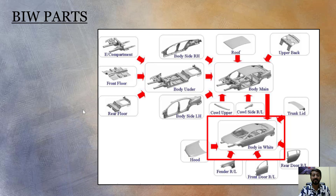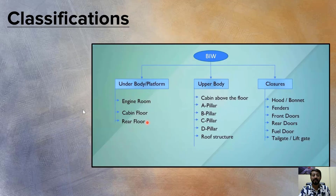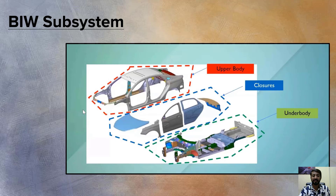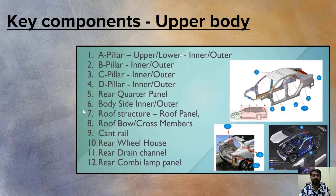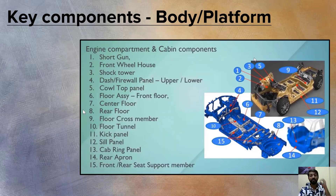The classification of BIW underbody parts includes engine room, cabin floor, and rear floor. The upper body includes the roof structure and pillars. Closures include front doors, rear doors, fuel doors, and bonnet. The key components are categorized into upper body, closures, and underbody sections.